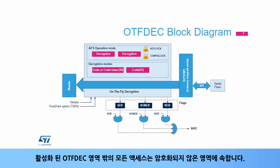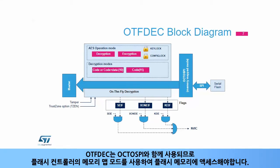Any access outside the enabled OTF-DEC regions belongs to a non-encrypted region. As OTF-DEC is used in conjunction with OctoSPI, it is mandatory to access the flash memory using the memory map mode of the flash controller.